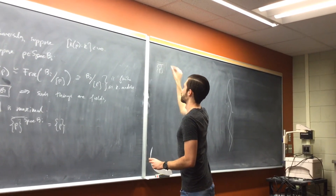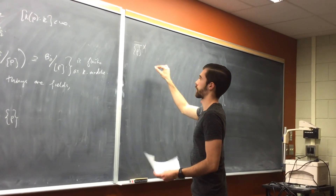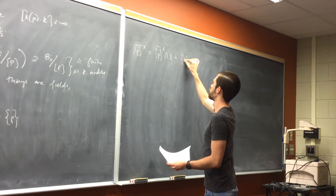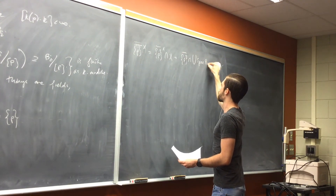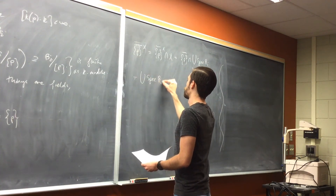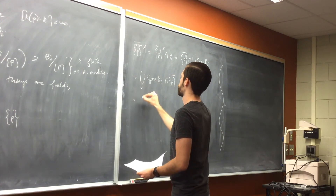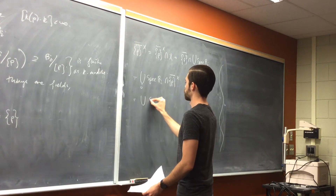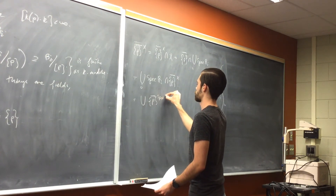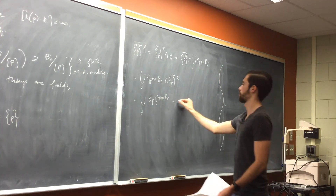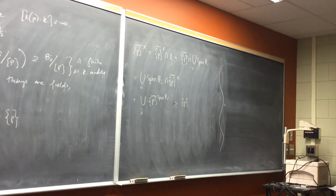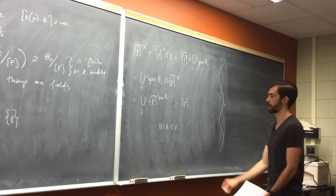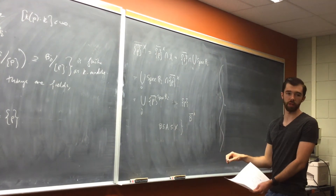Now we need the other direction. Suppose kappa(p) over k is finite; I want to show that p is closed. Take X as the union of Spec B_i's. Suppose p is in some Spec B_i. By the same calculation, kappa(p) = B_i / [p]. This lives inside kappa(p), which by hypothesis is a finite field extension of k. So this is finite as a k-module.